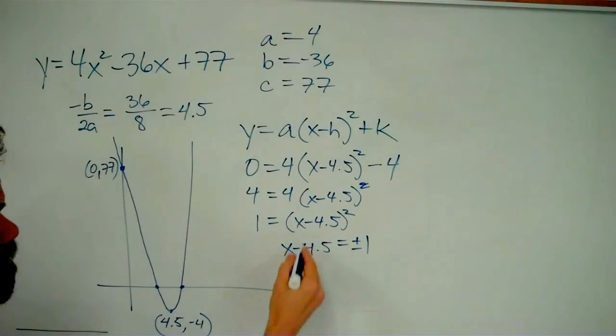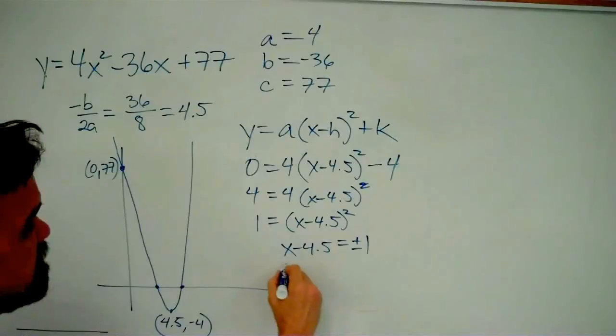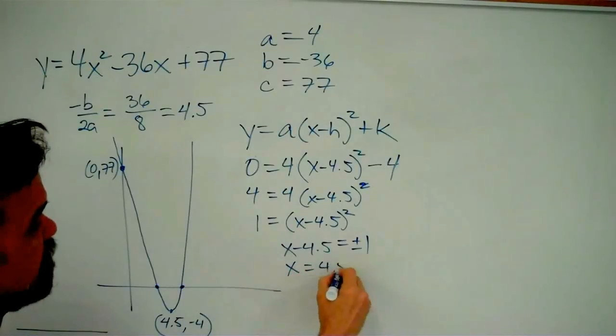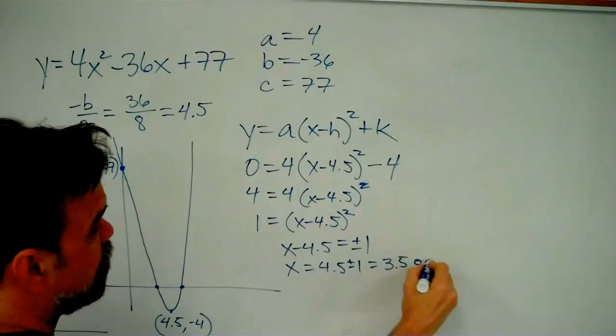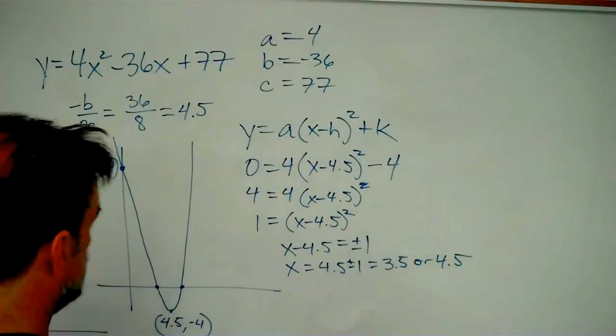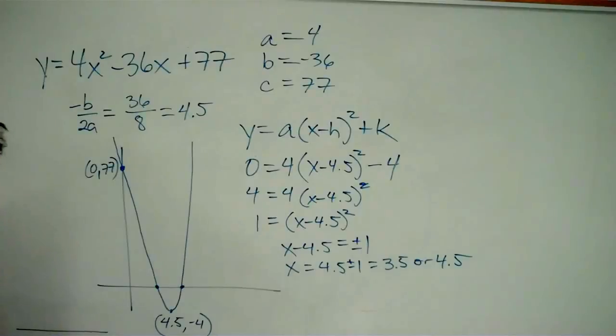And now I just add 4.5 to both sides, and I get x equals 4.5 plus or minus 1, which is 3.5 or 4.5. And that gives me my two x-intercepts here. One of them is the point 3.5, 0, and the other one is the point 4.5, 0. And that's all there is to it.